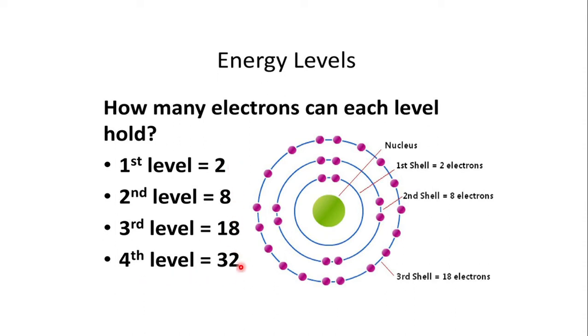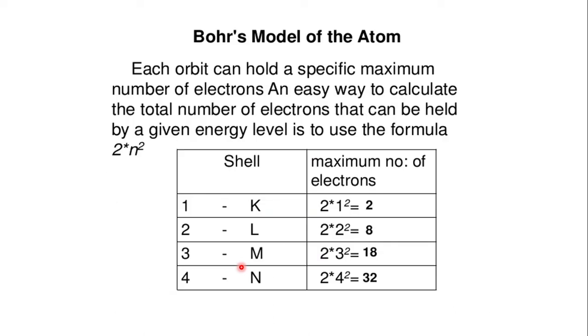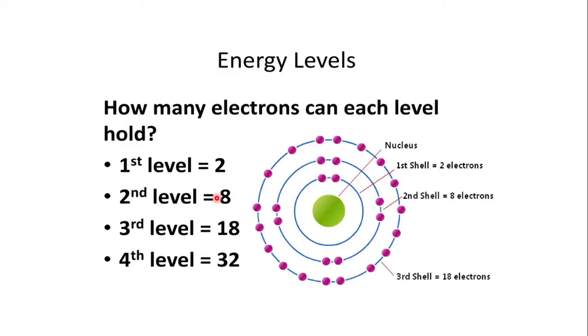If you cannot follow the formula 2N², just remember these numbers: K shell holds 2 electrons, L shell holds 8 electrons, M shell holds 18 electrons, and N shell holds 32 electrons.